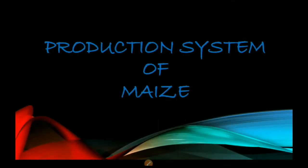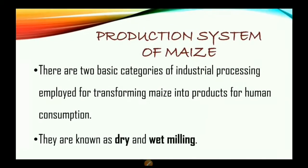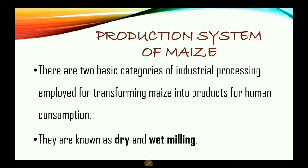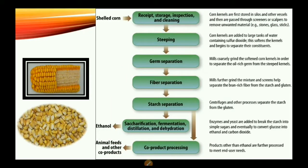Now let us look at the production system of maize. There are two basic categories of industrial processing employed for transforming maize into products for human consumption: they are known as dry milling and wet milling. Let's take a look at the wet milling process first.